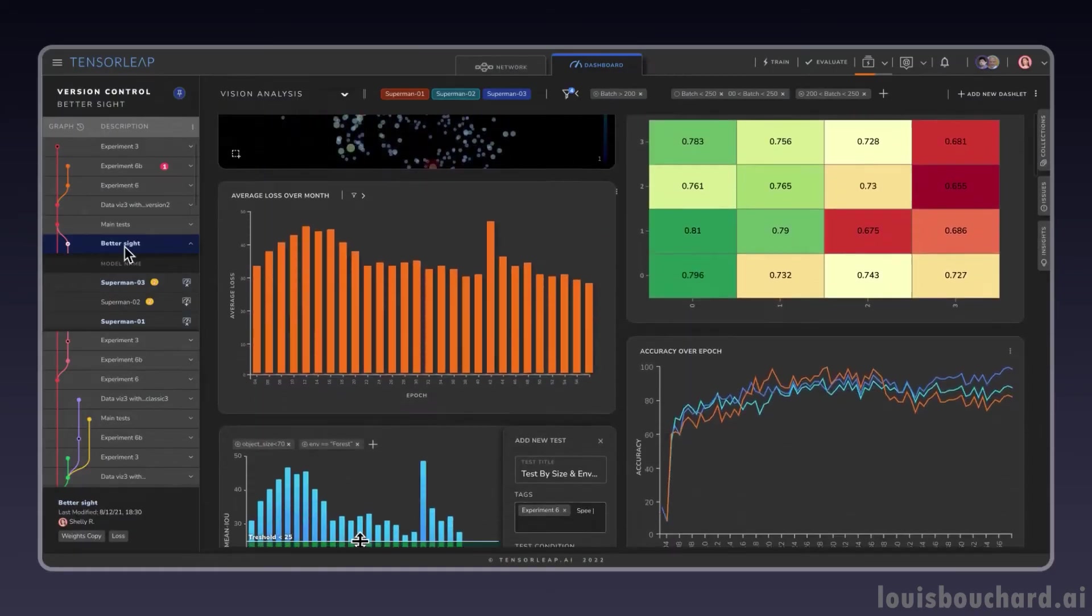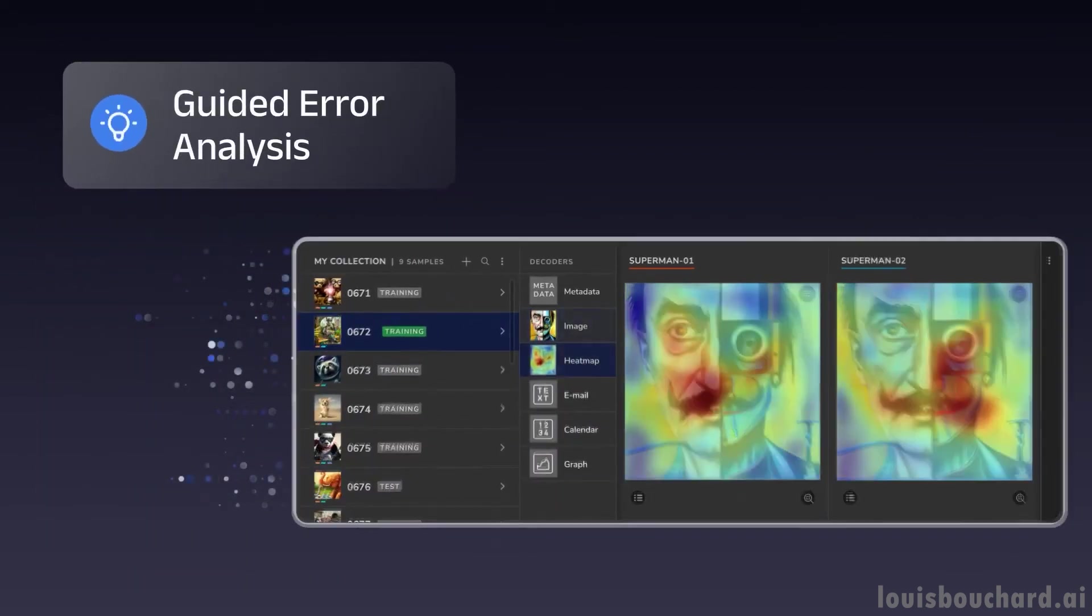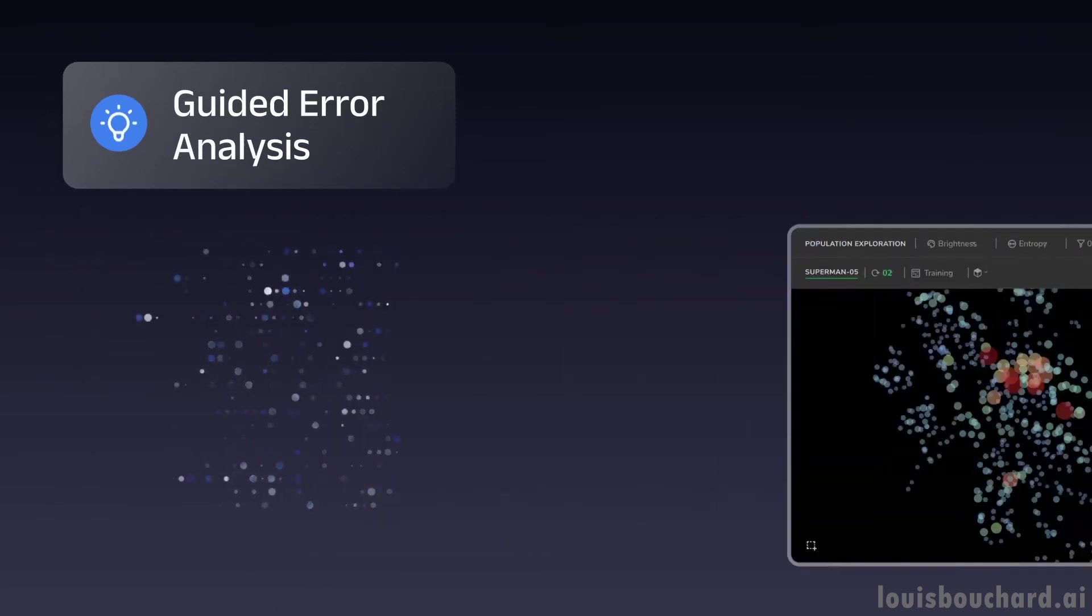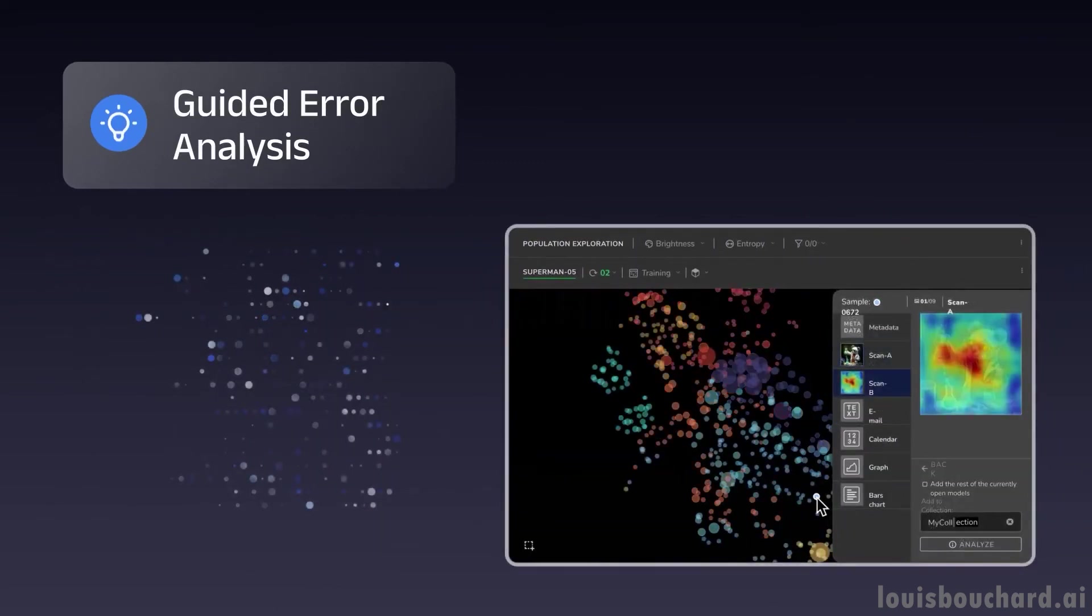Explainability also reduces the need for tons of experiments and the need for lots of manual tasks in order to identify and resolve issues to get better results. In short, the goal here is to demystify the black box behind AI models, which is also my goal with this channel. How fitting.